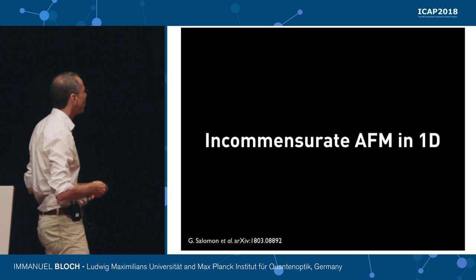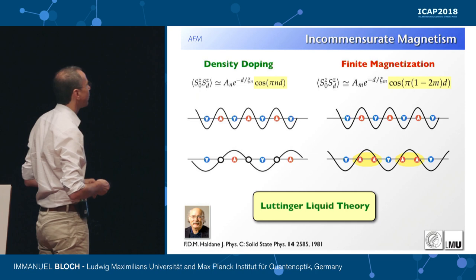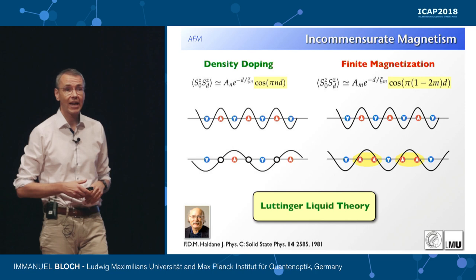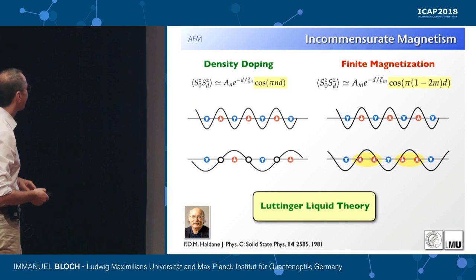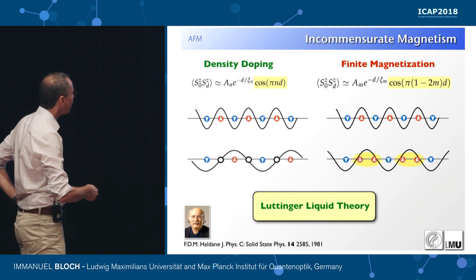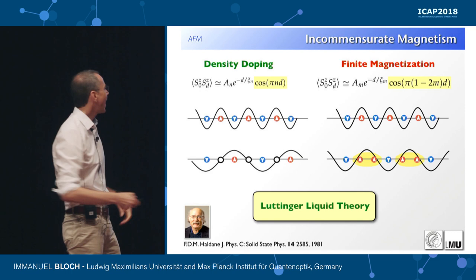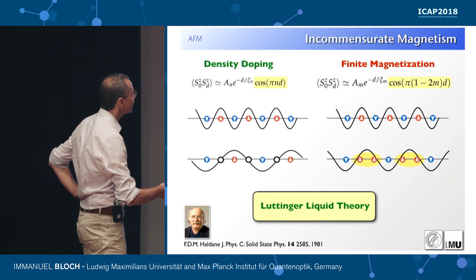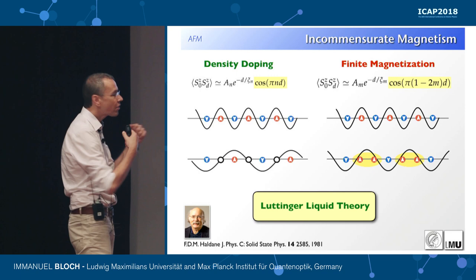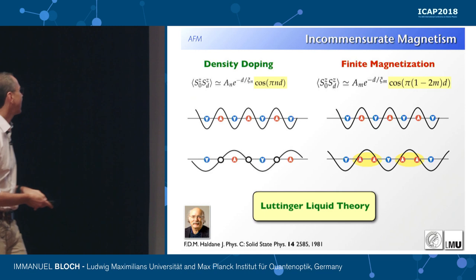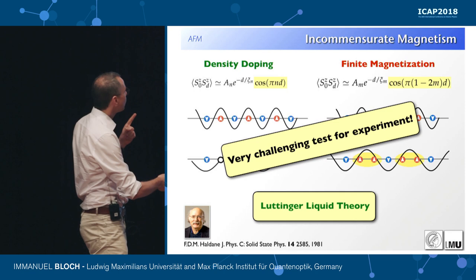Let me touch on new results related to how holes are placed in the lattice, which is more subtle than what I've described so far. This goes back to Luttinger liquid theory, invented by Duncan Haldane, which we use to describe 1D systems efficiently. What Luttinger liquid theory predicts is that holes inserted into the 1D system do not position themselves randomly — instead, the wave vector of the antiferromagnetic order is stretched as you dope the system. The same happens when you magnetize the system.